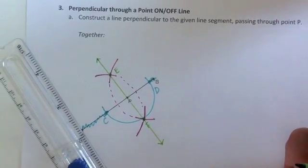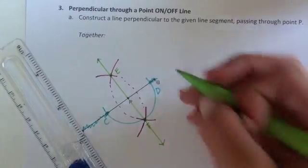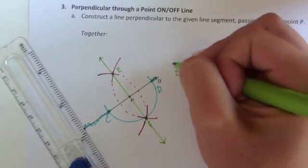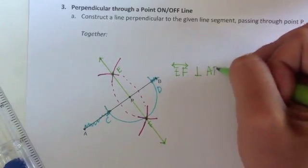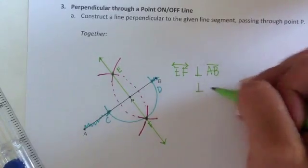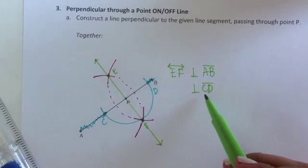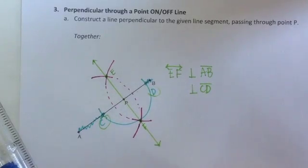There are a couple conclusions we could make, but the most important conclusion is that now we have a perpendicular line. Line EF is perpendicular to segment AB, or you could say perpendicular to segment CD. You can only say perpendicular to segment CD if you have these two points labeled. If not, then you can't say it.